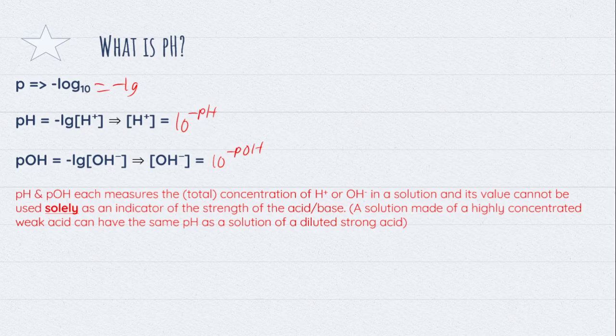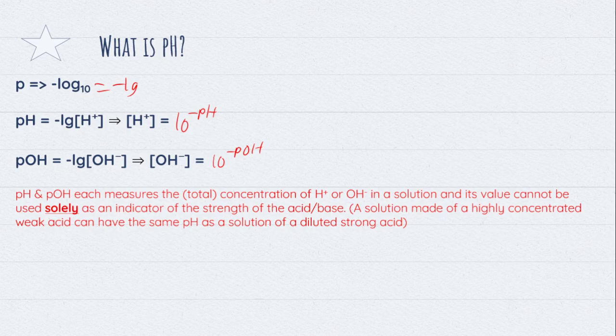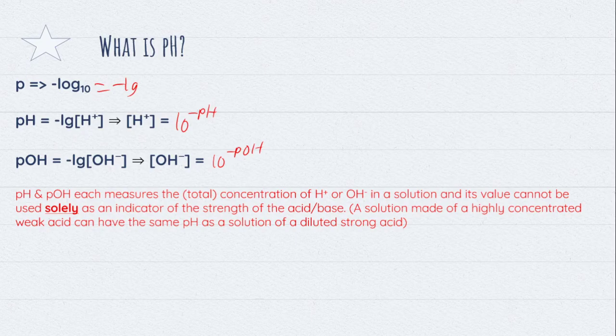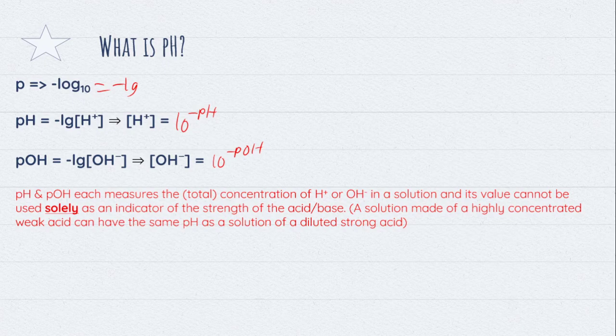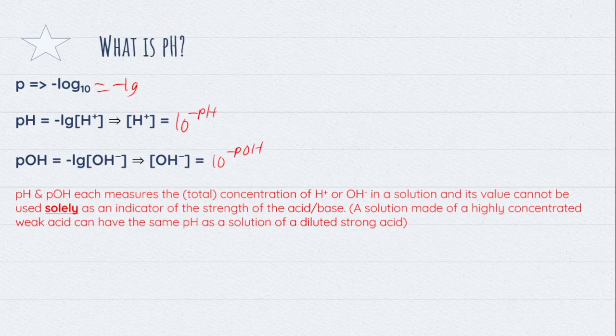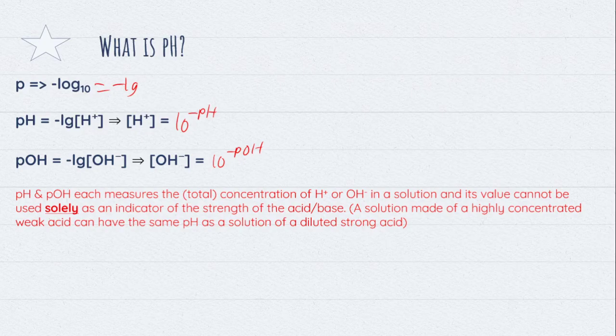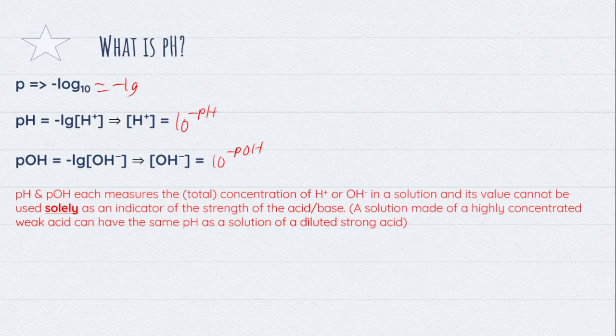And because of that, we cannot actually use this solely as an indicator of the strength of an acid or base. For example, I can have a very concentrated solution of ethanoic acid, a weak acid, and have it having the same pH as a solution of a very diluted, let's say, nitric acid. Even though both have the same pH, we know that ethanoic acid is a weak acid because it dissociates partially in water.